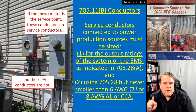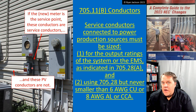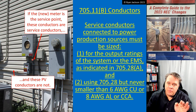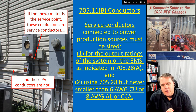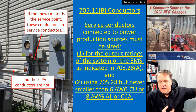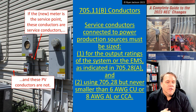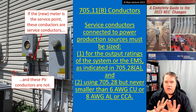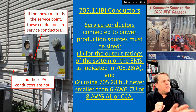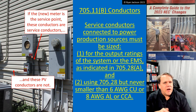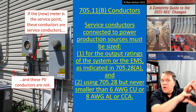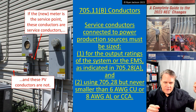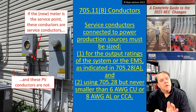How do you size service conductors? Service conductors do have minimum sizing requirements. Service conductors connected to power production sources — coming out of the PV disconnect to the meter — have to be sized for the output ratings of the PV system, or the power production system, or the energy management system as indicated in 705.28. So there are two ways to size those service conductors. Let's keep the discussion in the realm of solar to make it easy. You're going to size those conductors based on the capacity of your generating system — your PV modules — to carry the capacity of the PV system or the energy management system.